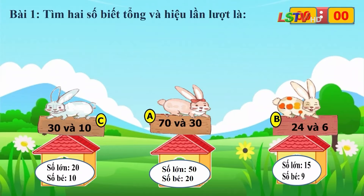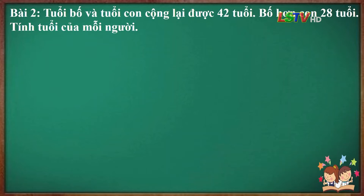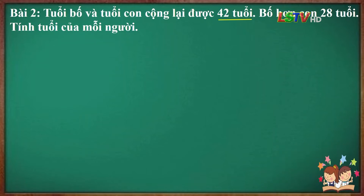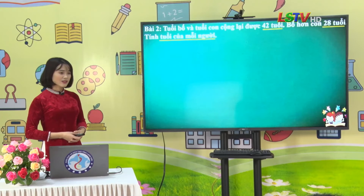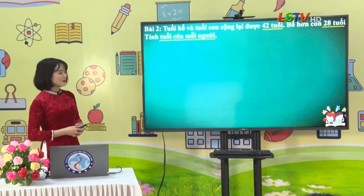Để khắc sâu được kiến thức, chúng ta chuyển sang bài tập số 2. Tuổi bố và tuổi con cộng lại được 42 tuổi. Bố hơn con 28 tuổi. Tính tuổi của mỗi người. Bài toán cho biết tổng của 2 số là 42, hiệu của 2 số là 28. Bài toán yêu cầu tính tuổi của mỗi người — tuổi của bố là số lớn, tuổi của con là số bé. Ta có thể tóm tắt bài toán bằng sơ đồ như sau.